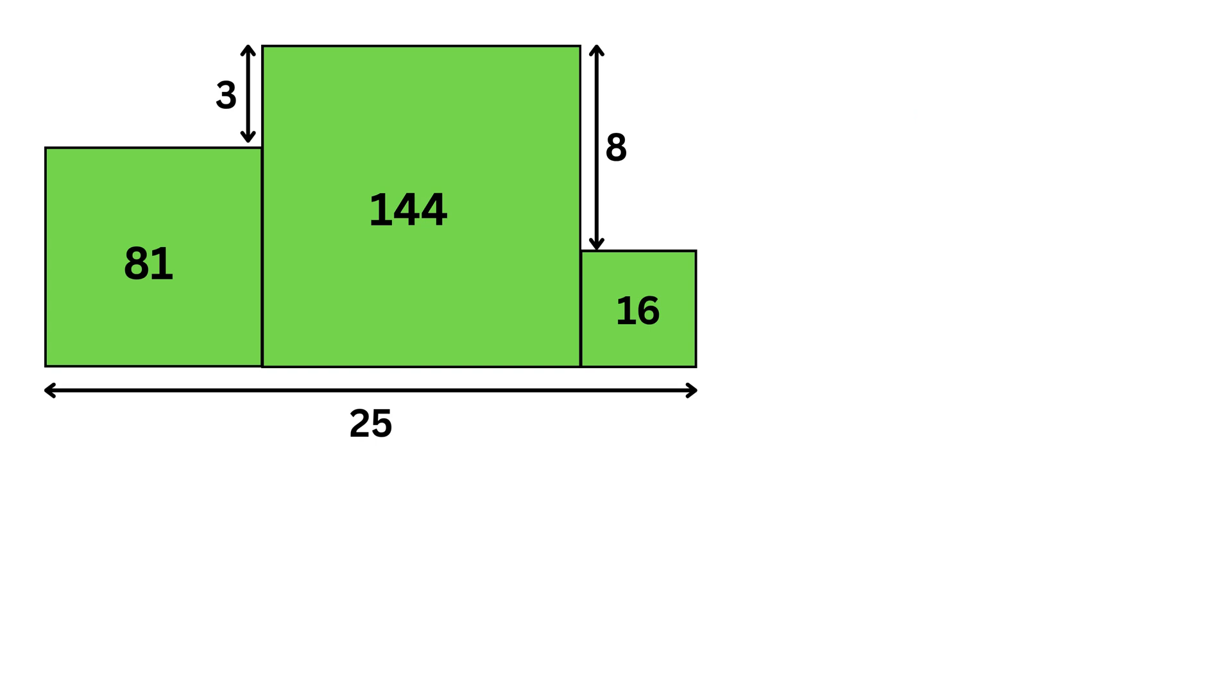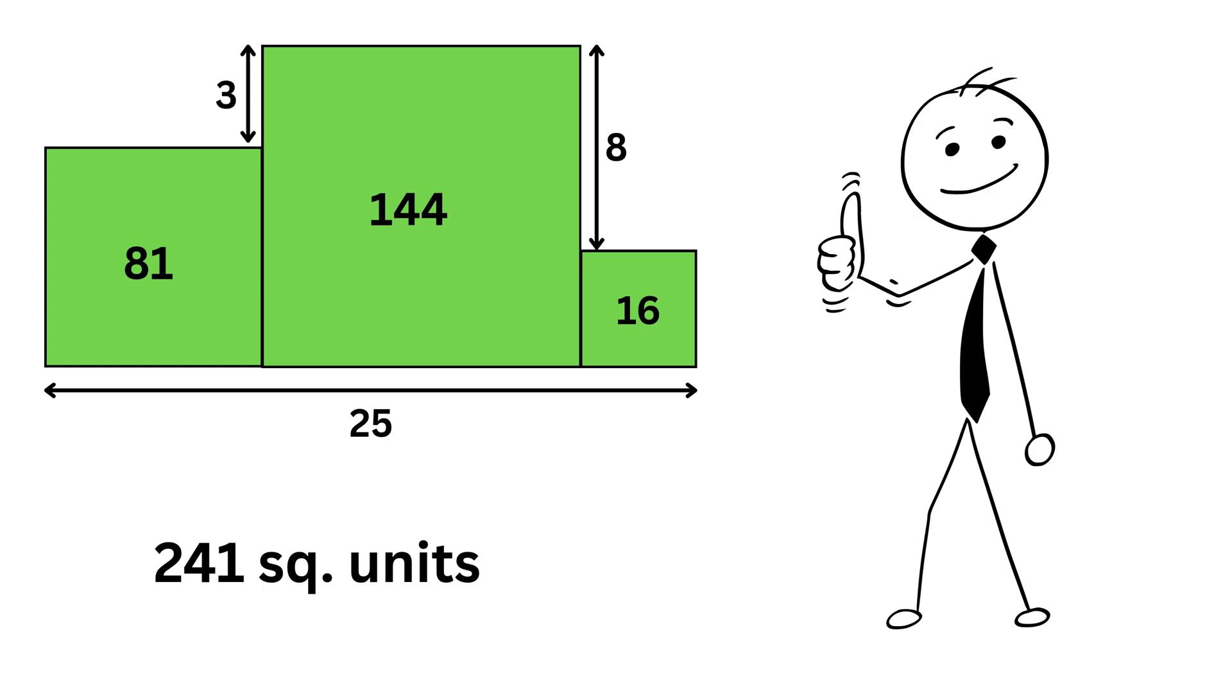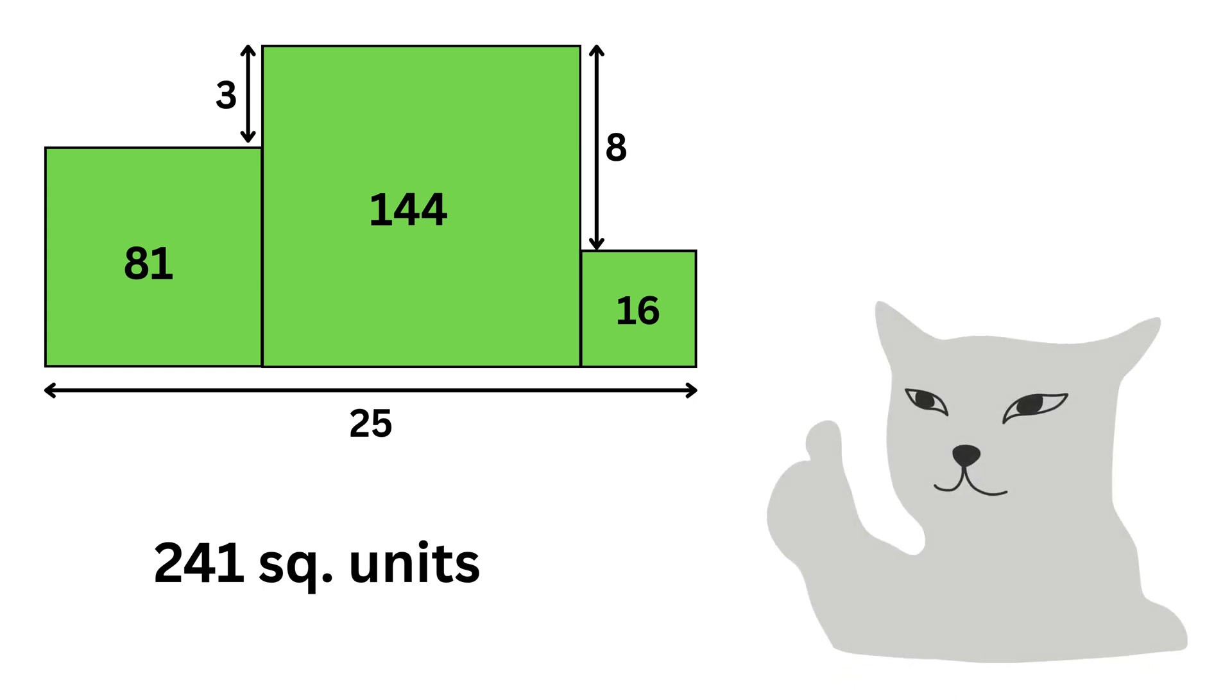Now let's add all three areas together. 81 plus 144 plus 16 gives 241 square units. And that's our final answer.